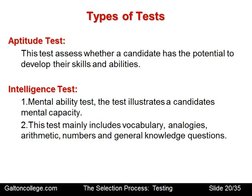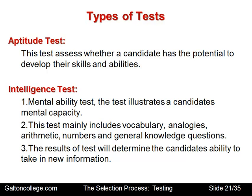The test may look at vocabulary, the use of words, linking words together, analogies — reasoning from similar circumstances into the present situation — simple arithmetic, numbers, general knowledge questions and even logical questions. There are various types of questions devised by psychologists to test a person's intelligence. Intelligence testing is well established, and the results will determine the candidate's ability to take in new information, which is important.